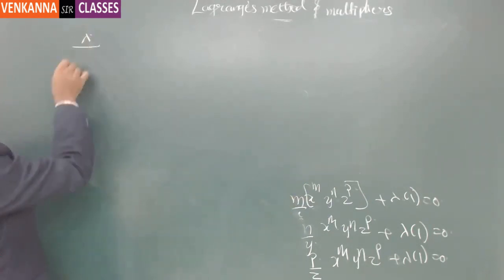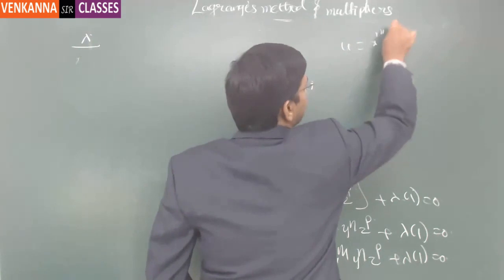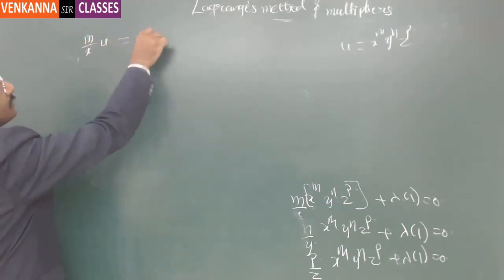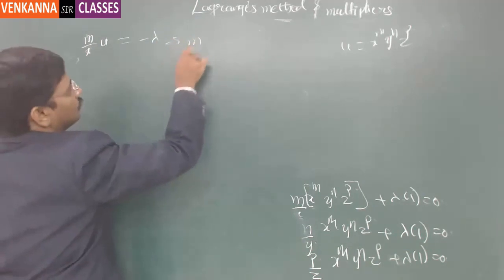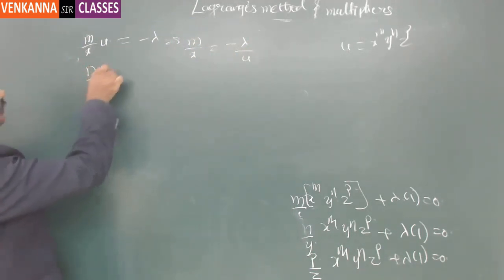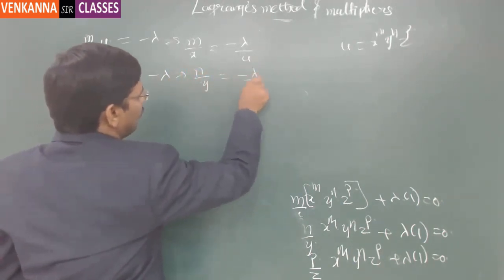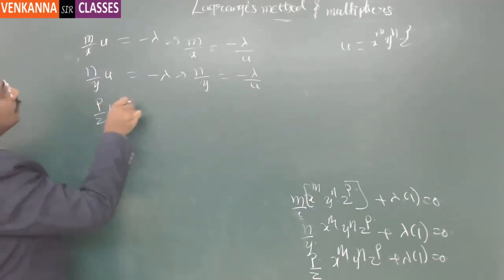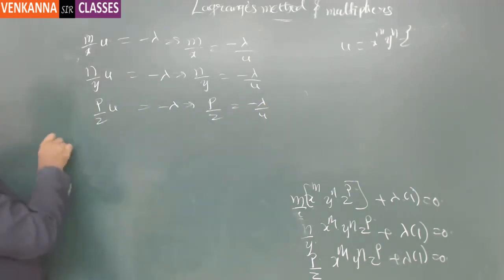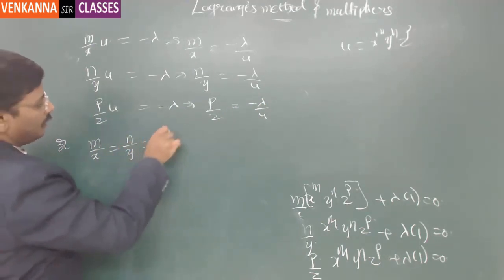Notice that the original function u = x^m · y^n · z^p. So from the first equation, m/x times u equals minus λ, meaning m/x equals minus λ/u. Similarly from equation 2, n/y equals minus λ/u, and from equation 3, p/z equals minus λ/u. So m/x = n/y = p/z = k, where k = minus λ/u, a constant.